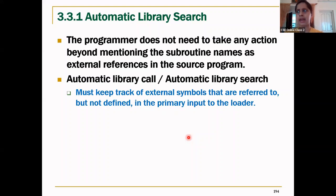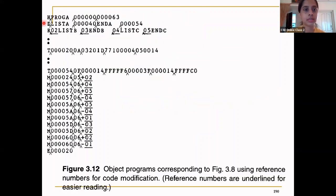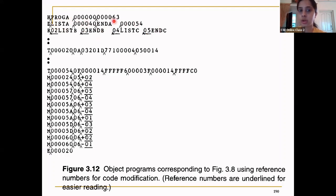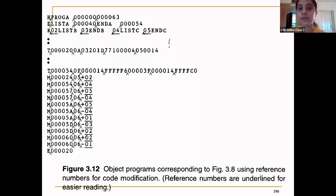In the previous algorithm we had external references and external definitions, where pass one reads external definitions and external references. Pass one completely takes care of definitions and references at the time of loading — it stores the symbol, its address, and the starting address in the ESD table. Pass two then loads and starts executing based on that stored information.